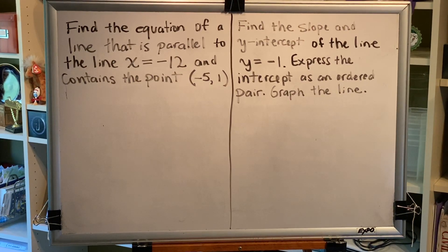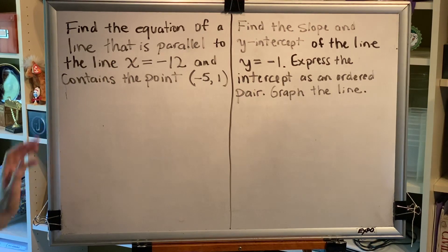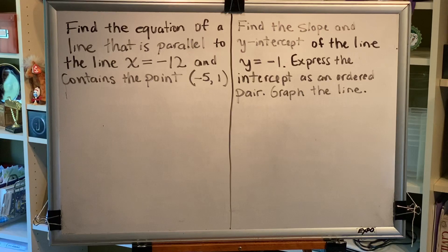The topic of this video is properties of horizontal and vertical lines. Let's solve two problems. Here's the first one. Find the equation of a line that is parallel to the line x equals negative 12 and contains the point (-5, 1). So there are a few things we want to keep in mind with a problem like this. The first is we need to know the four facts that were explained in the previous video because those are going to help us solve this problem.